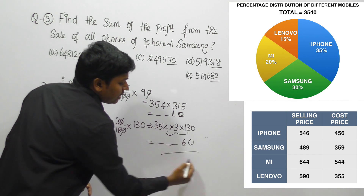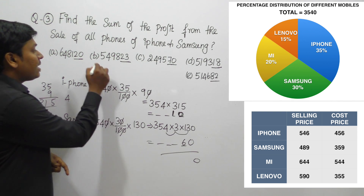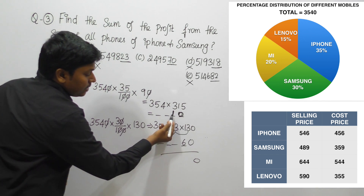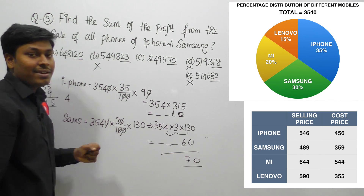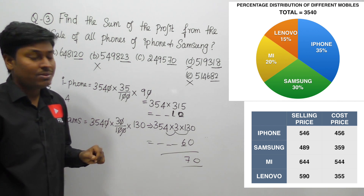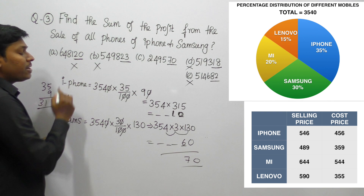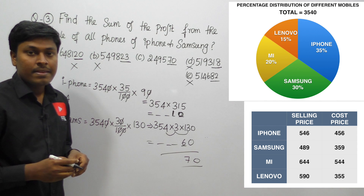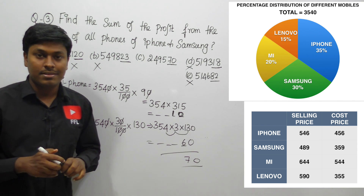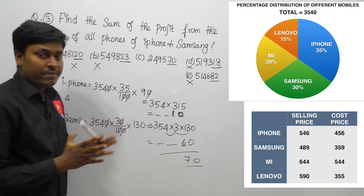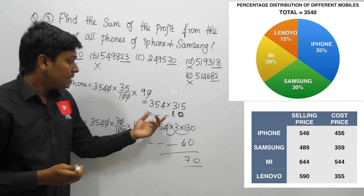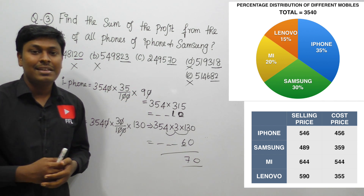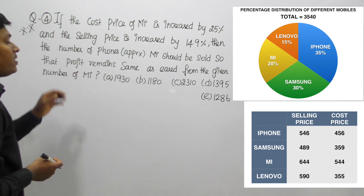The last digit is 0, so we can eliminate options B, D, and E. The last two digits are 70, so we can eliminate option A (whose last two digits are 20). Only option C remains, with last two digits 70. So option C is the answer. Don't waste time on full multiplication — finding the last two or three digits is enough to eliminate all options.